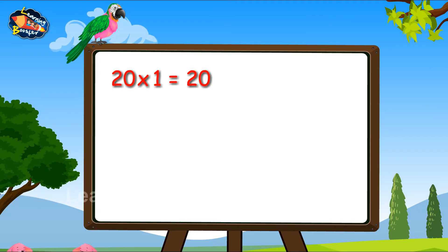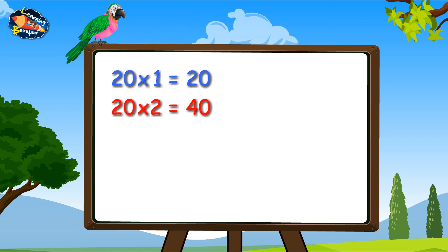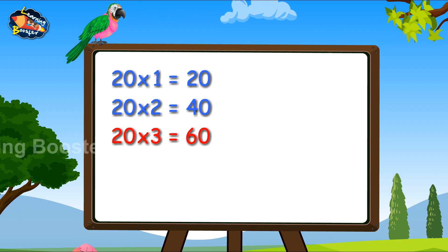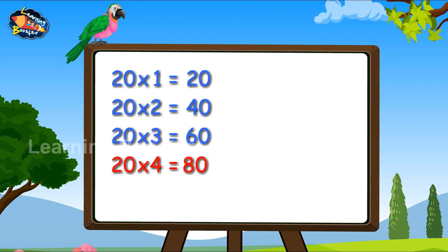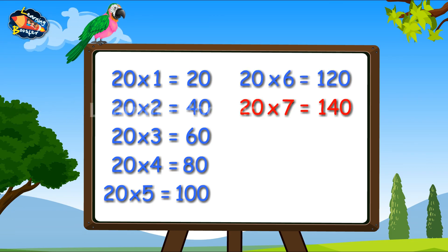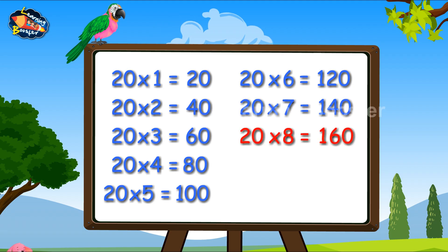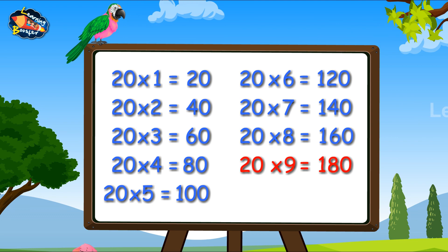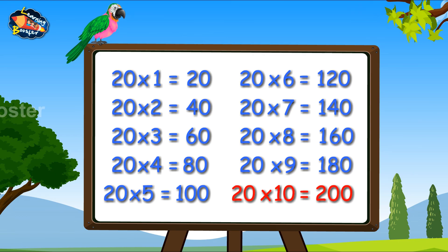20 1s are 20. 20 2s are 40. 20 3s are 60. 20 4s are 80. 20 5s are 100. 20 6s are 120. 20 7s are 140. 20 8s are 160. 20 9s are 180. 20 10s are 200.